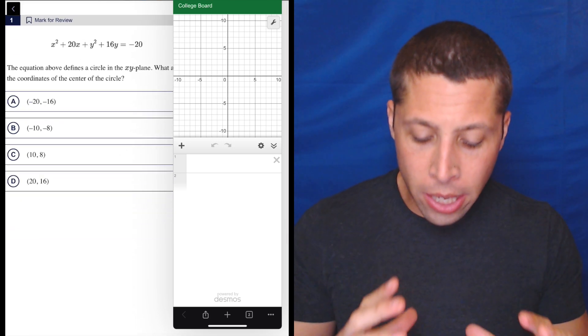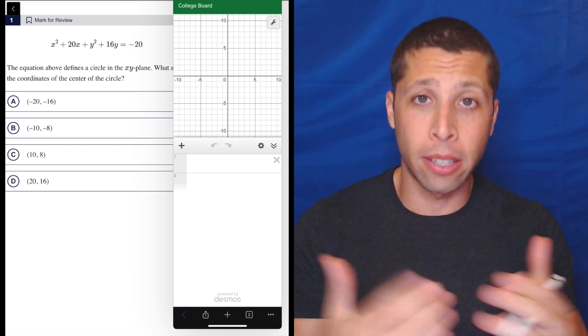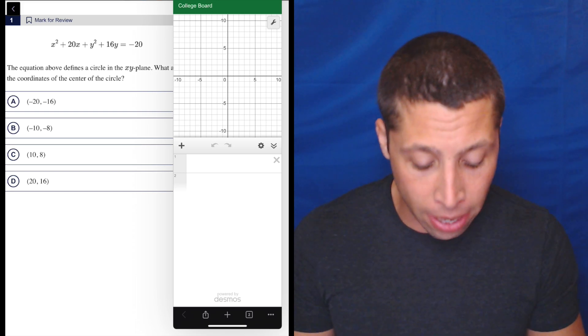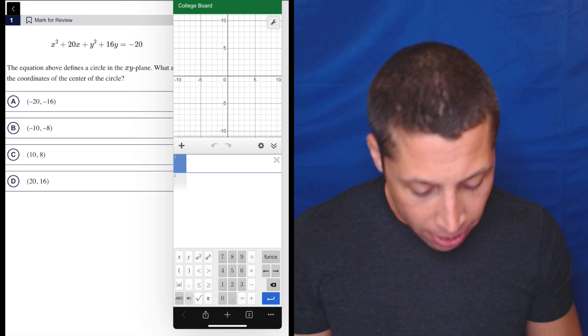Because normally we can read the center of the circle from the circle equation when it's in a certain format, right? But it's not in that format now. We can tell that. But we can also just add this into Desmos in whatever format, and it'll work.